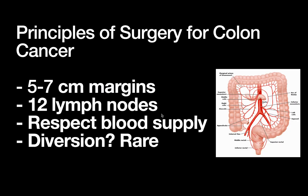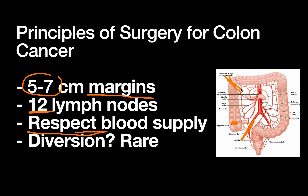Surgical principles: first, you want adequate margins — for colon cancer that's five to seven centimeters. You want an adequate lymph node harvest, which means at least 12 lymph nodes. You achieve that by getting wide margins and performing a high ligation of the arterial blood supply, since lymph nodes run along the arteries. Resections should respect the blood supply, meaning you plan resections that follow an arterial territory. For a cecal cancer, you'd do a right hemicolectomy, based off the ileocolic and right colic arteries.